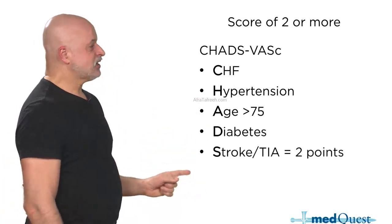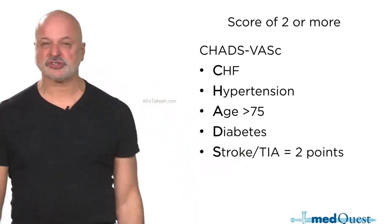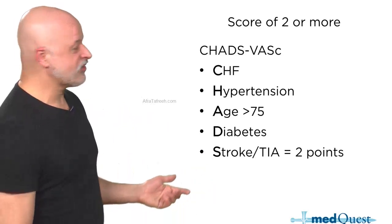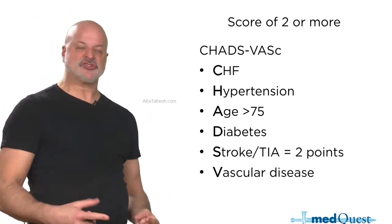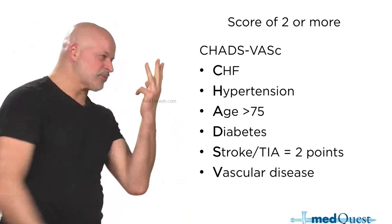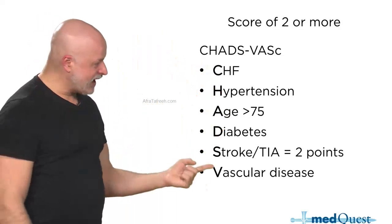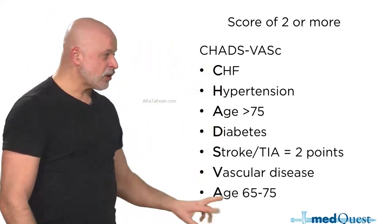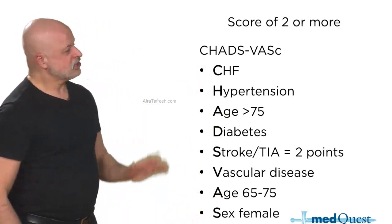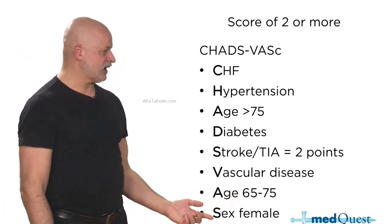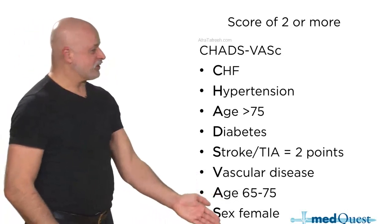Vascular disease — coronary disease, carotid disease, cerebral disease, peripheral arterial disease, aortic disease — is one point. Intermediate age is one point, and female gender is one point. If you have a score of two or more, you're going to get anticoagulated.